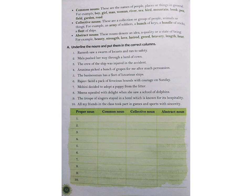The example here is beauty, strength, love, hatred, greed, bravery, length, heat. The word here is beauty. The strength is still alive. Love, hatred, greed, bravery, length, season, heat. The word here is abstract nouns.